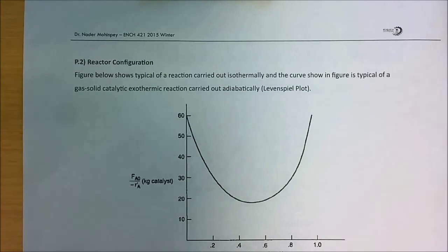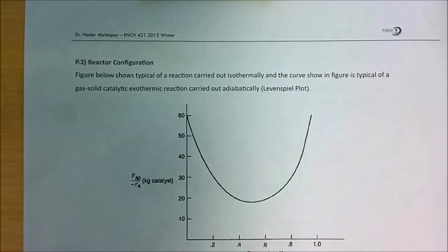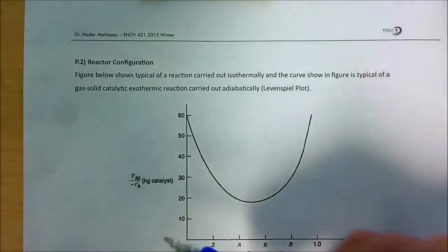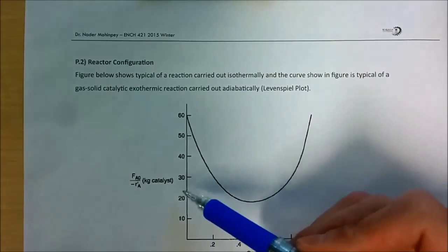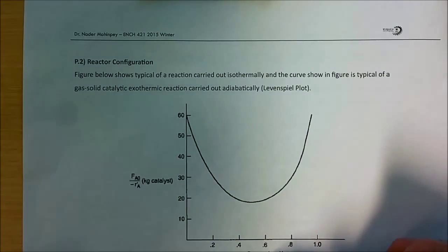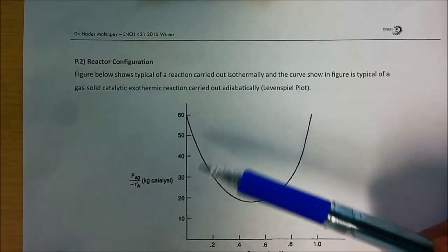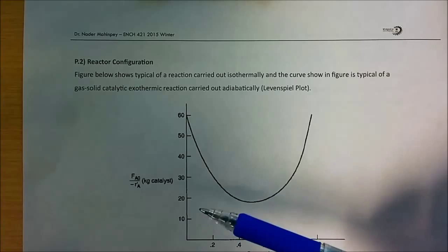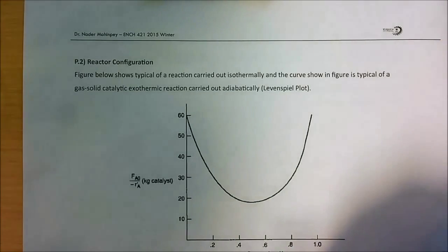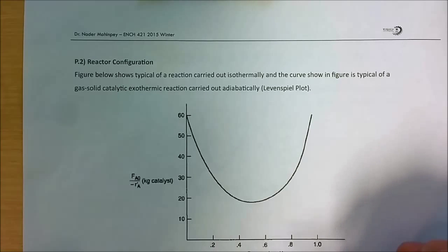Now let's move to problem number 2, which uses a Levenspiel plot of F_A0 over minus R_A on the Y-axis and conversion on the X-axis. This plot is typical of a reaction carried out isothermally, and the curve shown is typical of a gas-solid catalytic exothermic reaction carried out adiabatically.